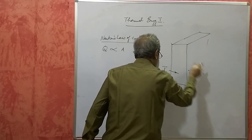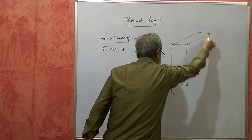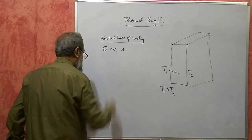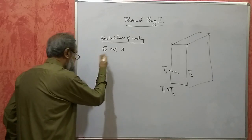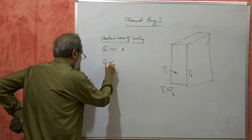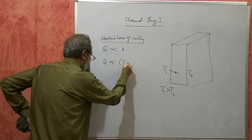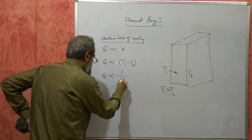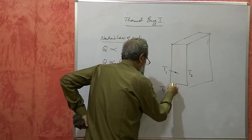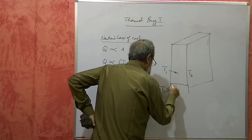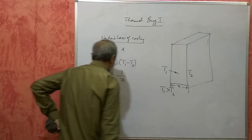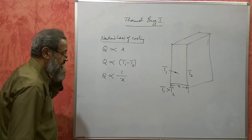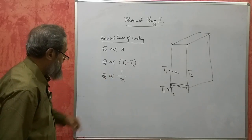Greater the area, greater is the heat transferred. Q is also directly proportional to the difference in temperatures (T1 − T2), and inversely proportional to the thickness of the medium X. More is the thickness, less is the heat transferred; less is the thickness, more is the heat transferred.